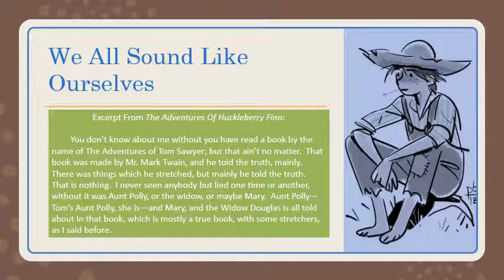So this is the first paragraph: 'You don't know about me without you have read a book by the name of The Adventures of Tom Sawyer, but that ain't no matter. That book was made by Mr. Mark Twain, and he told the truth, mainly. There was things which he stretched, but mainly he told the truth. That is nothing. I never seen anybody but lied one time or another without it was Aunt Polly, or the widow, or maybe Mary. Aunt Polly — Tom's Aunt Polly she is. And Mary and the widow Douglas is all told about in that book, which is mostly a true book, with some stretchers, as I said before.'